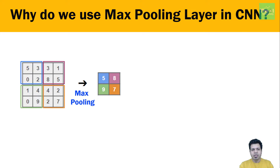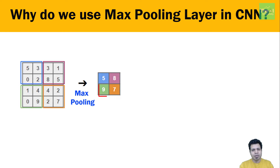Now move to the right. We have selected a stride of 2, so we move two positions over and repeat the process, capturing the largest value from the feature map — in this case it is 8. We then repeat the same process for the remaining parts of the feature map, capturing values 9 and 7 respectively.